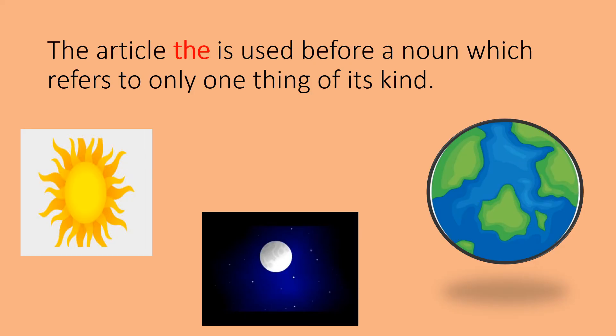The next rule is that the article 'the' is used before a noun which refers to only one thing of its kind. That means we use 'the' when there is only one such thing. For example, there is only one sun, one moon, and one earth. So we say 'the sun', 'the moon', and 'the earth'.